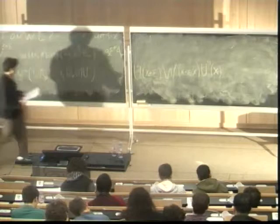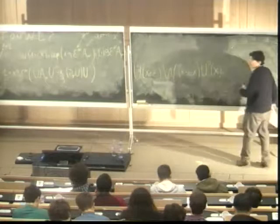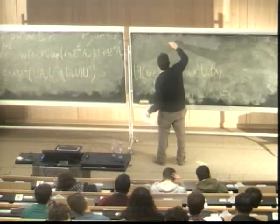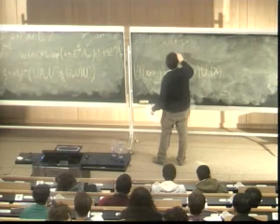So if you have omega(x+epsilon, x) and you apply a gauge transformation, you multiply from the left by U of the endpoint and from the right by U^{-1} of the initial point. That is what you get.